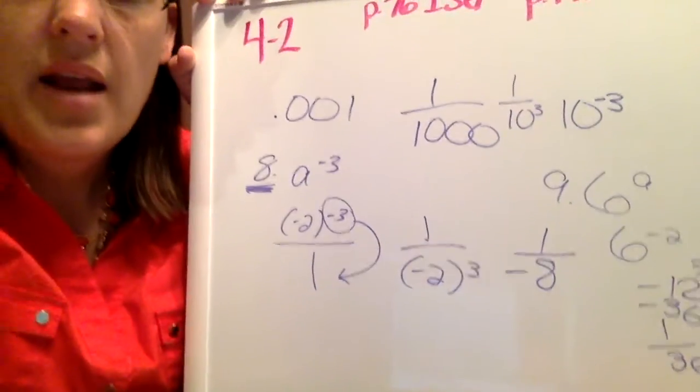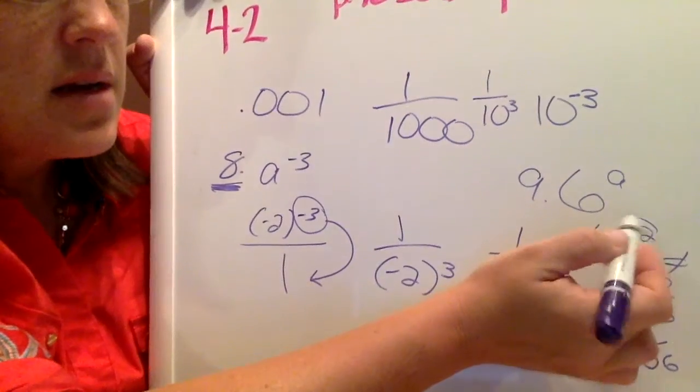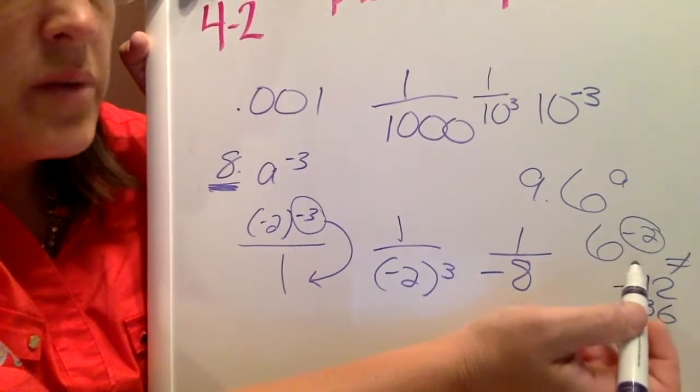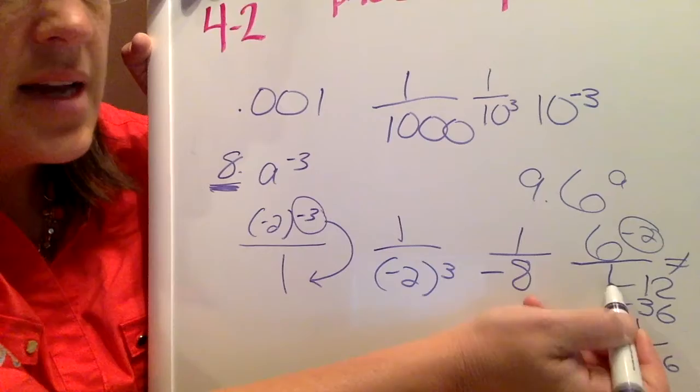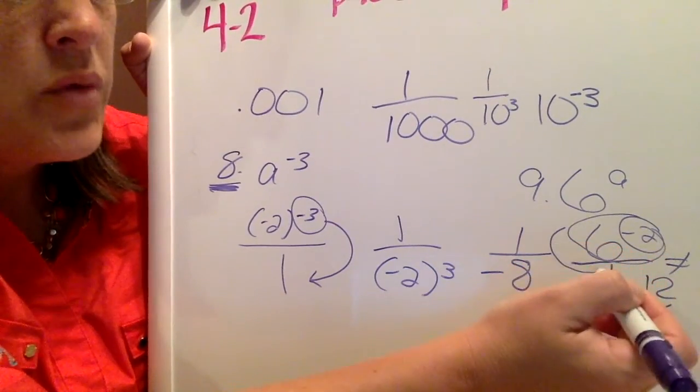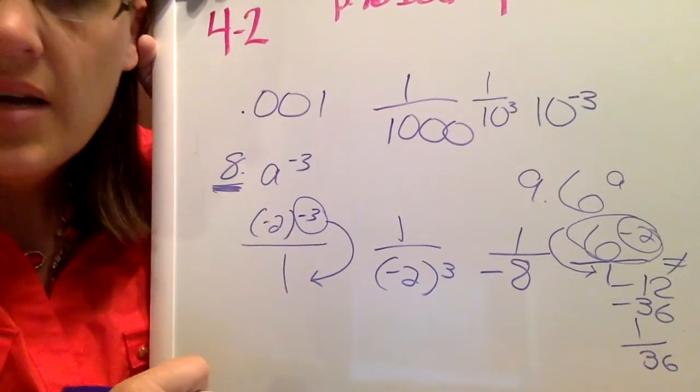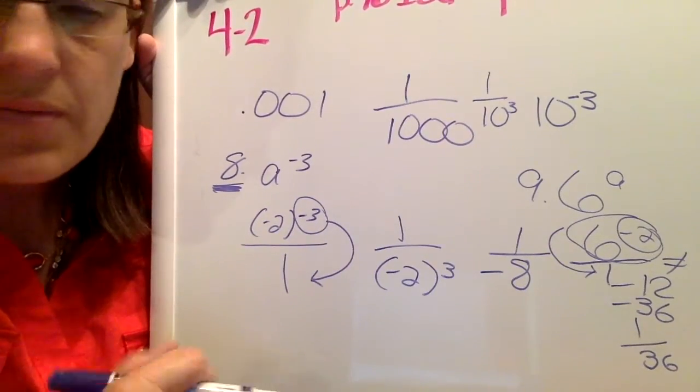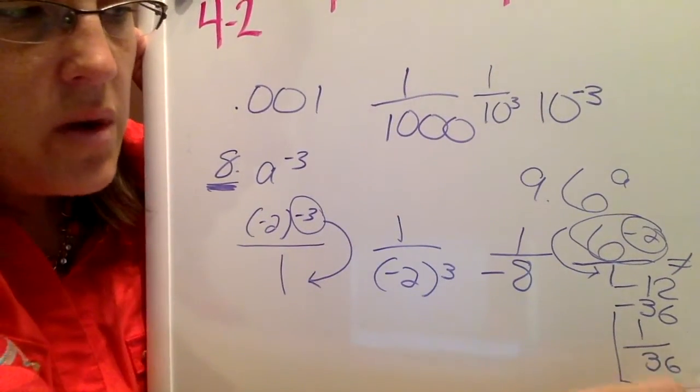It's equal to 1 over a positive 36. Negative exponents want to move and become positive. So right now, it's 6 to the negative 2 over 1. I'm going to grab this whole thing and move it to the bottom and have it become 6 to the positive 2, giving me my answer of 1 over 36.